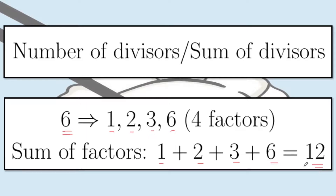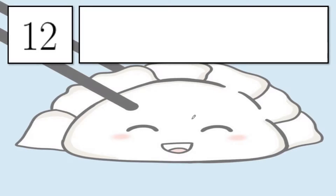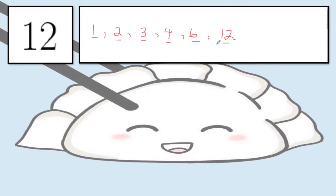I will be telling you guys a shortcut or method to get the number of divisors and the sum of the divisors of a positive integer easily. Let's start with the first example. Let's try to deal with the number 12. We can always write the positive divisors of 12. 12 is divisible by 1, by 2, by 3, by 4, by 6, and then by 12. Listing them all down, there are a total of 6 divisors. And if I add all of them — 1 plus 2 plus 3 plus 4 plus 6 plus 12 — I should be getting 28.